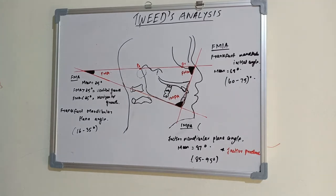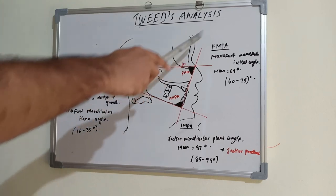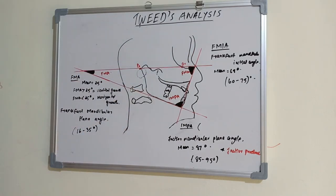So that is all about Tweeds Analysis. We have three angles: FMA, FMIA, and IMPA. This is basically developed to help in treatment planning, encourage preparation, and prognosis of orthodontic cases. Basically it uses three planes as we've seen and makes it a diagnostic triangle. Three planes: mandibular plane, FH plane, and lower incisor angle. This helps in various orthodontic procedures.